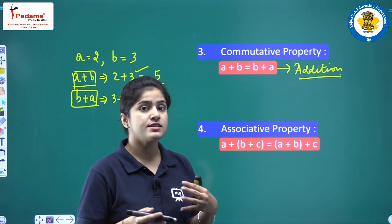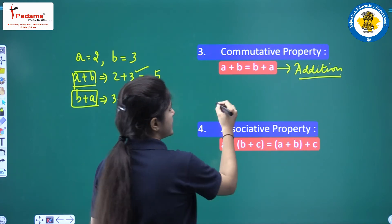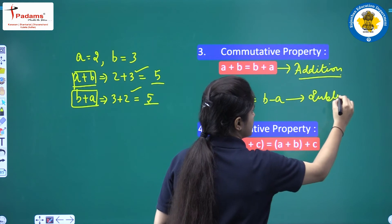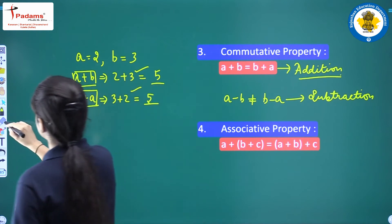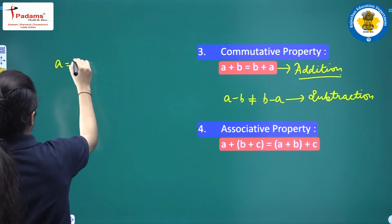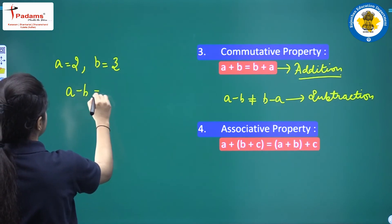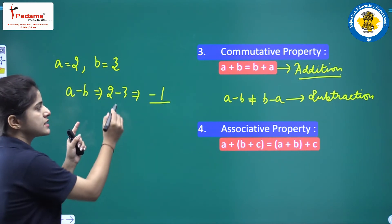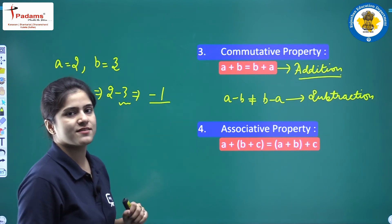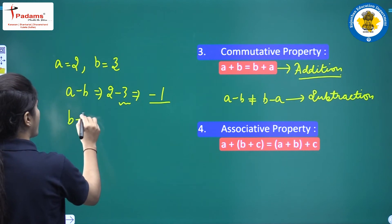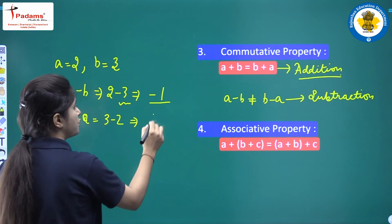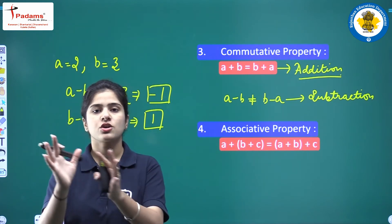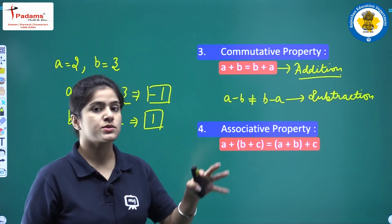But are integers commutative under subtraction? No, they are not. A minus B is not equal to B minus A. Using the same example, A equals 2 and B equals 3: A minus B equals 2 minus 3 equals minus 1, because the larger number 3 has a negative sign. But B minus A equals 3 minus 2 equals 1. Since minus 1 is not equal to 1, integers do not commute under subtraction.